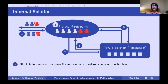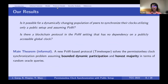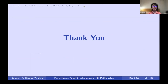In summary, we present the first proof-of-work based protocol — Timekeeper — which solves the permissionless clock synchronization problem. We achieve precision and accuracy assuming bounded dynamic participation and honest majority in terms of random oracle queries. That brings this talk to an end. Thank you for your attention.